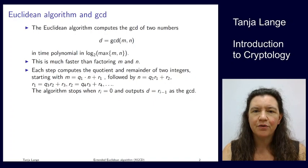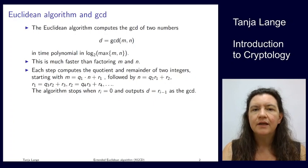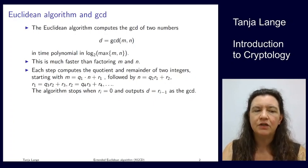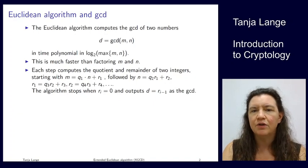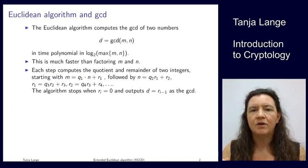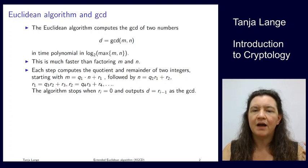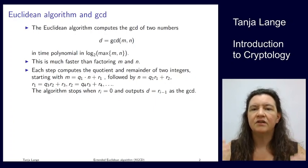So this short lecture is about how the extended Euclidean algorithm works. Let me briefly review what the Euclidean algorithm is doing. So this is something I expect you have seen earlier, it's an algorithm to compute the GCD, the greatest common divisor of two numbers. Let's take m and n, and then we're trying to figure out what is the largest number that divides both of them.